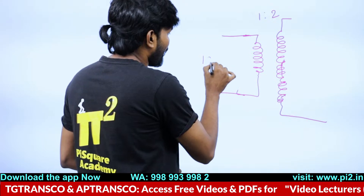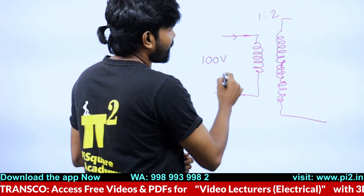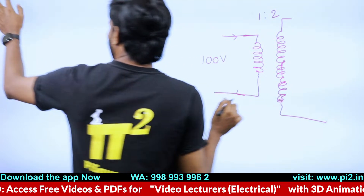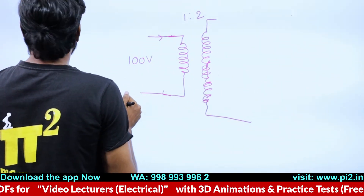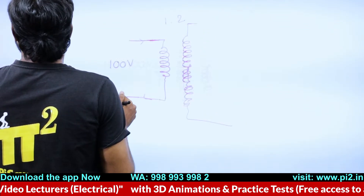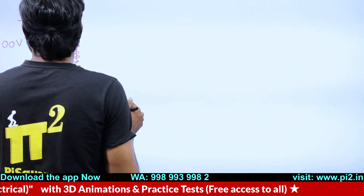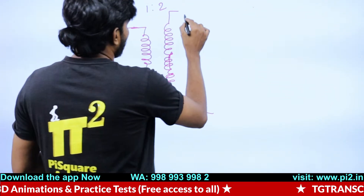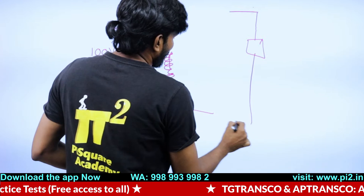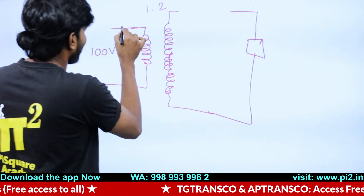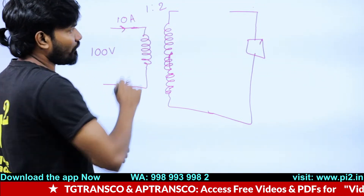I am giving 100 volts here, and let's take when I connect some load to this. When I connect some load, it is driving a current of 10 ampere. This current is 10 ampere.